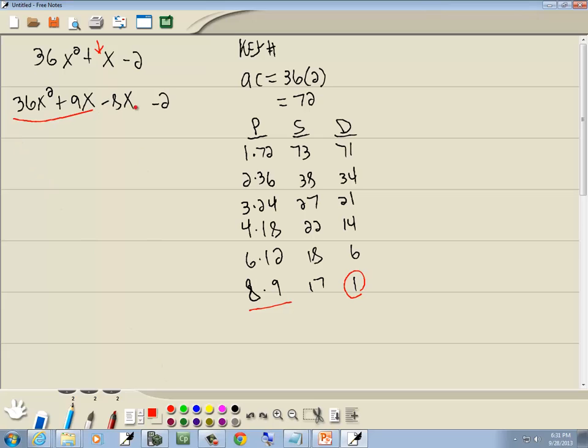Now, we want to use factoring by grouping. So I'll group the first two terms and group the last two terms. Now, the first two terms have a GCF of 9x, and that gives us 4x plus 1.